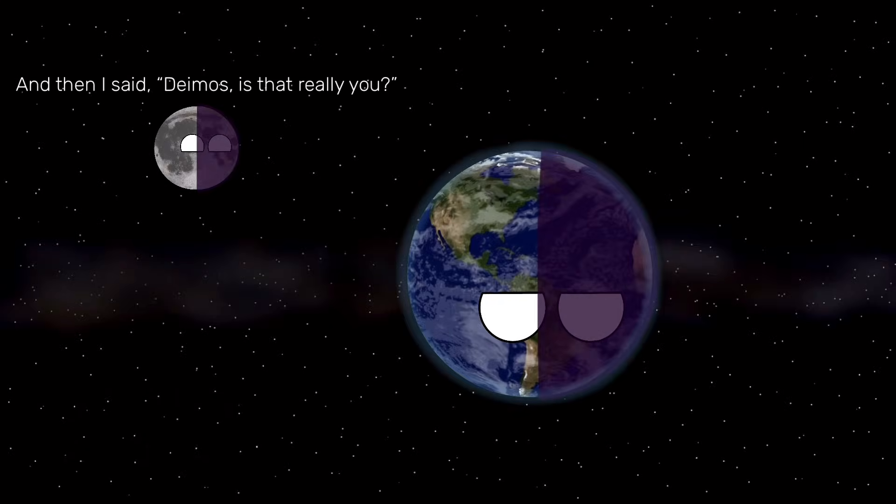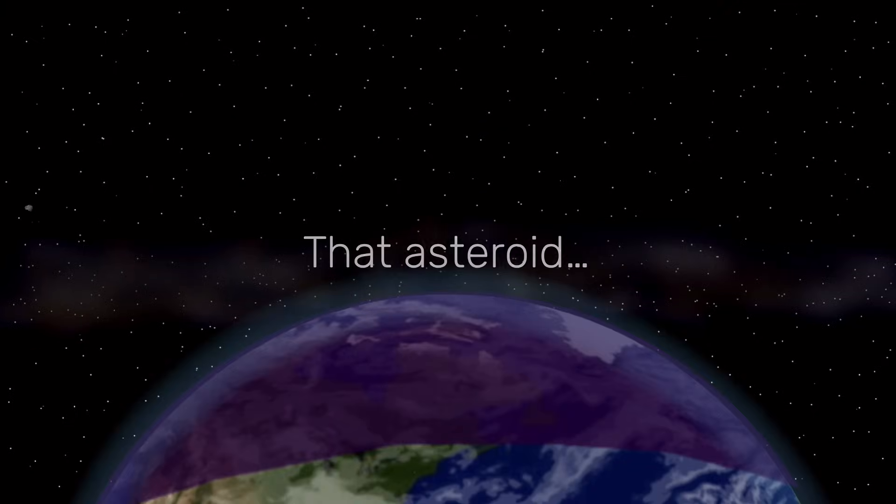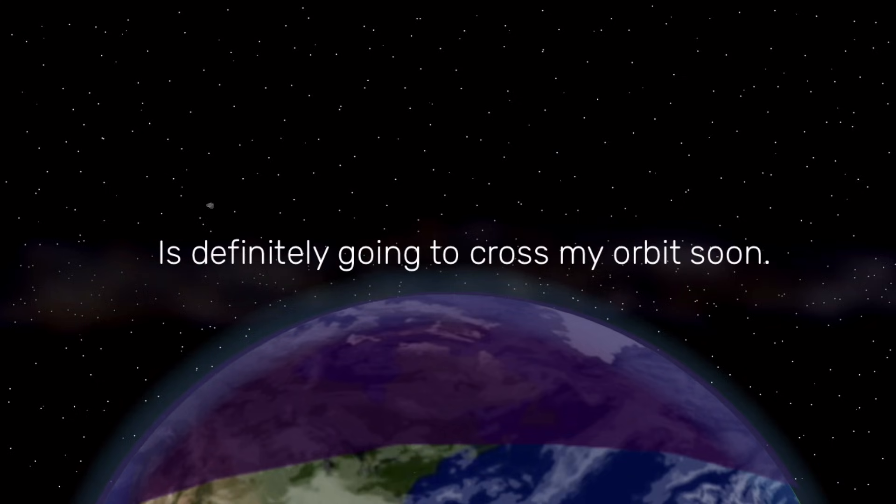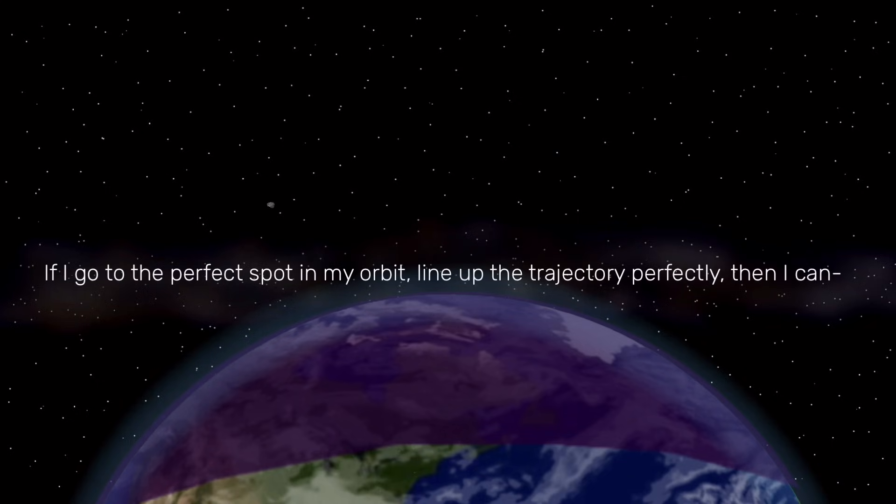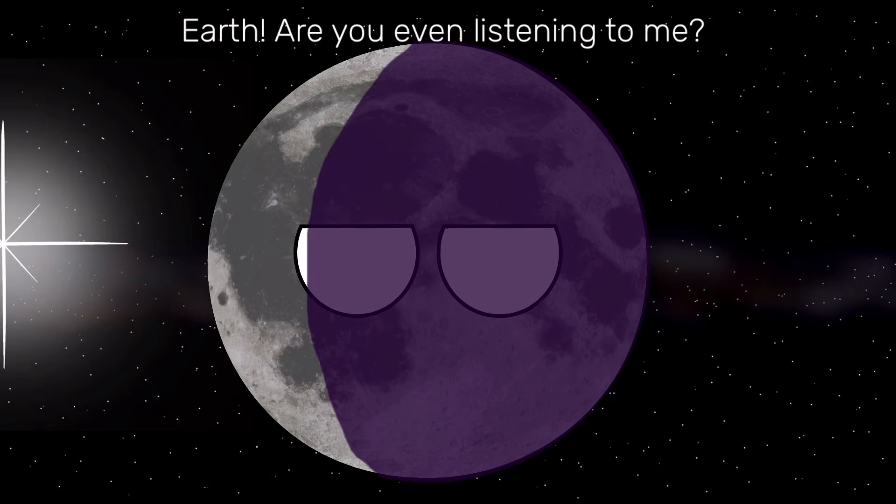And then I said, Deimos, is that really you? That asteroid, 2024 PT-5, is definitely going to cross my orbit soon. If I go to the perfect spot in my orbit, line up the trajectory perfectly, then I can... Earth, are you even listening to me?